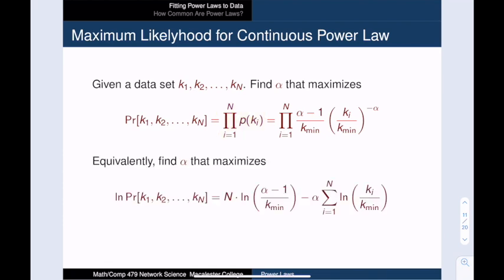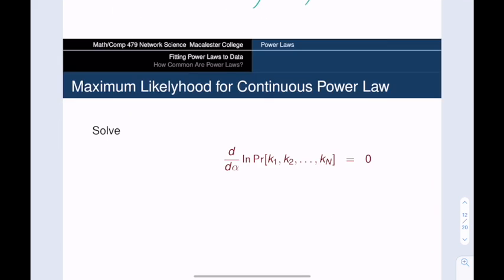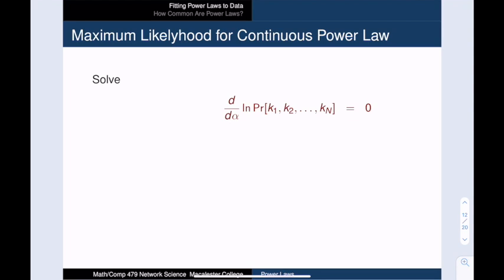So we would rather not deal with having alpha in the exponent. We can fix this by taking the log of both sides and then maximize that value instead. When we take the log, multiplication becomes addition, and exponentiation becomes multiplication. And some simplification gets us this formula. And now alpha appears twice. Once in this logarithm, and then once here multiplied by the sum of these constants.